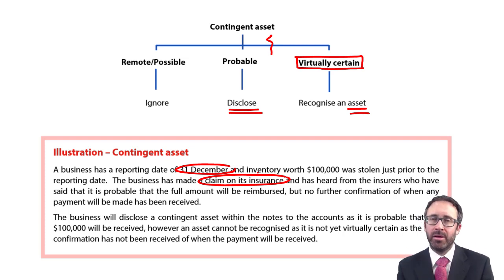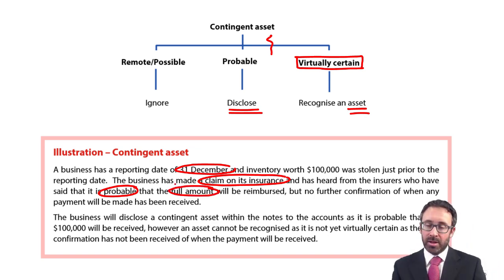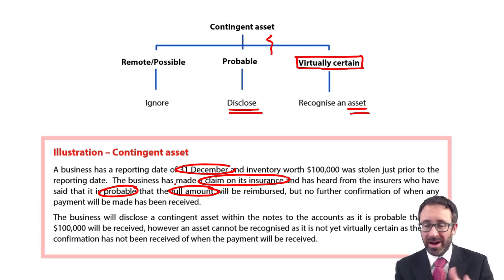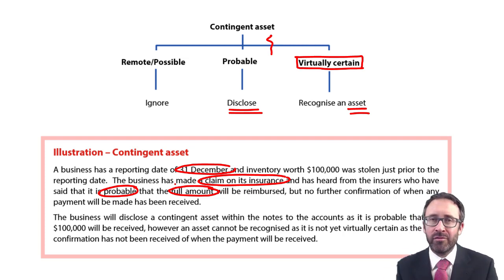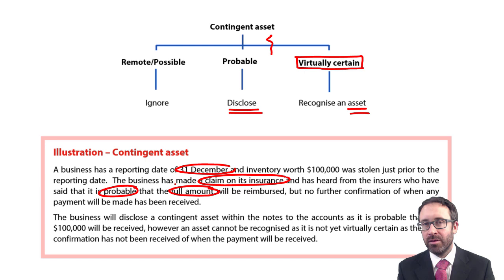It's contingent on whether or not the insurance company will reimburse us. We have heard from the insurers and they've said it is probable that the full amount will be reimbursed, but no further confirmation of when any payment will be made has been received. So it's not virtually certain, is it? Because the insurance company could turn around last minute and say they've noticed evidence that you were at fault and there wasn't the security in place within your factory, so they're not going to pay. So it's still probable — maybe they've got further investigation to do — but it's more likely than not they'll pay you the £100,000. But it's not virtually certain.